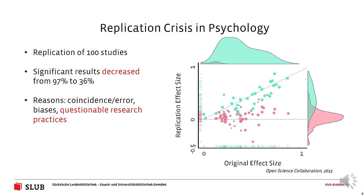To elaborate on that issue, I'd like to talk about the replication crisis in psychology — not because this discipline has more problems than others, but because a group of scientists actually tried to collect data on this idea. They attempted to replicate a hundred of the more relevant studies and found that significant results when replicated decreased from 97 to 36 percent. This shows that even widely acknowledged research is not quite as robust as we think.